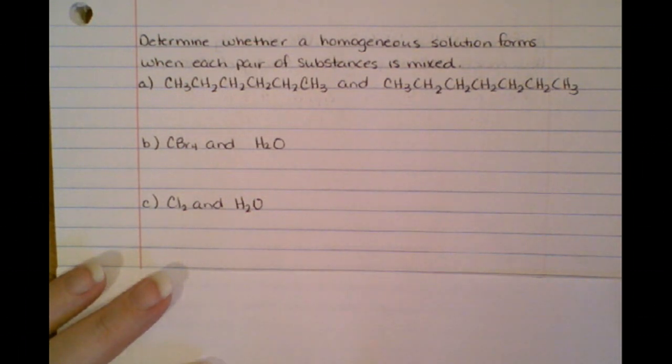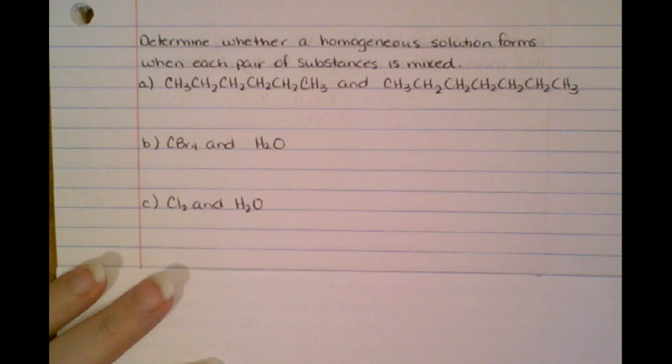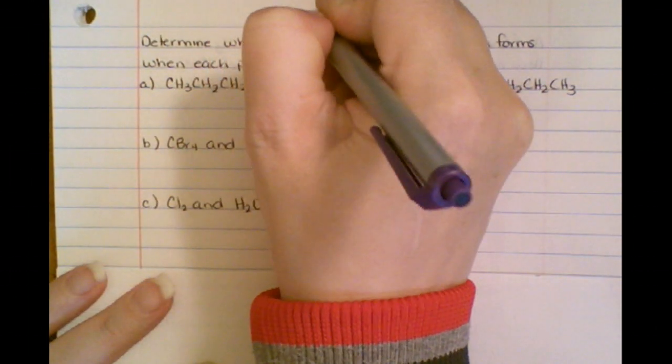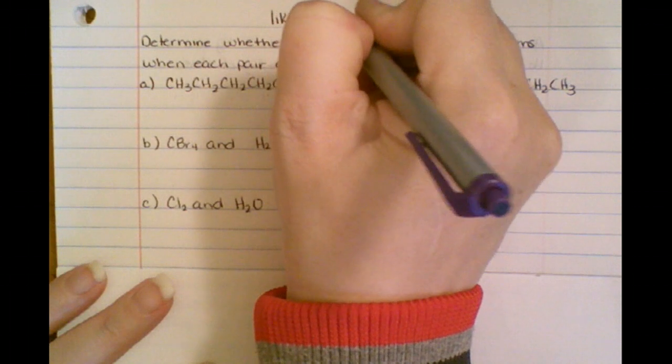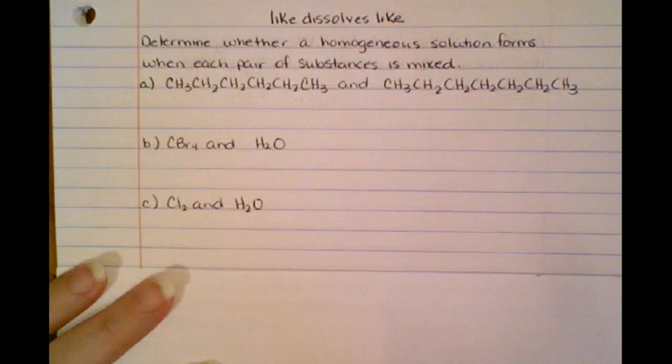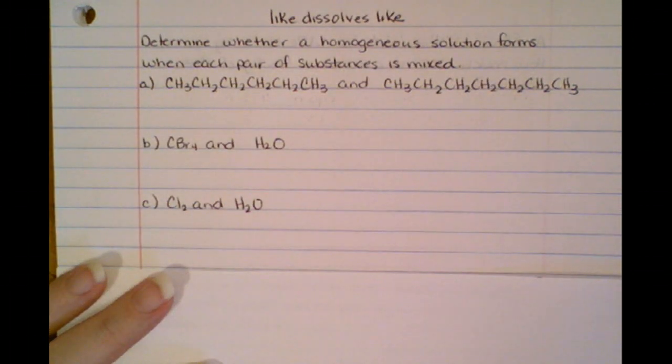We want to look at if we put two substances together if it's going to make a homogeneous solution. How do we do this? Remember, this is where I've taught you that like dissolves like. So if two things aren't alike, then they won't mix. We need to determine whether or not our substances are polar or nonpolar.